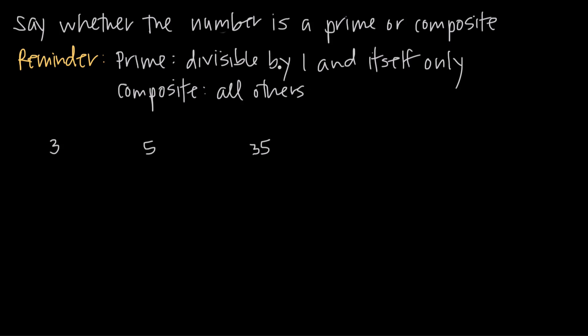A prime number is a number which is evenly divisible by only 1 and itself. In other words, there's no number besides 1 and the number itself that will go evenly into the number we've been given.